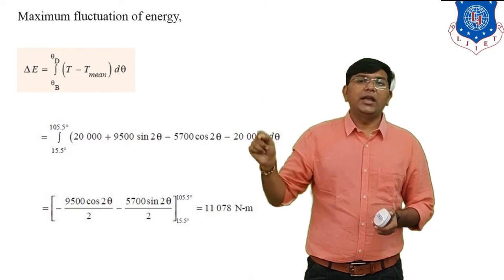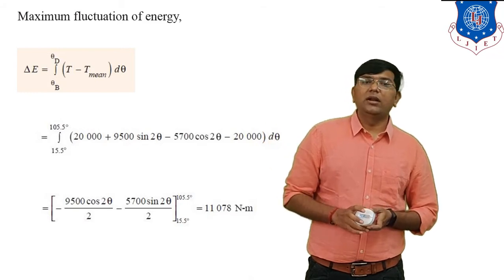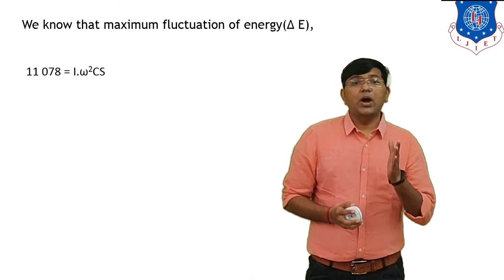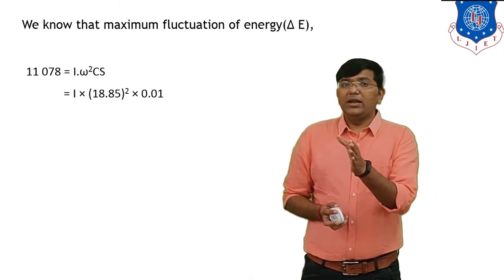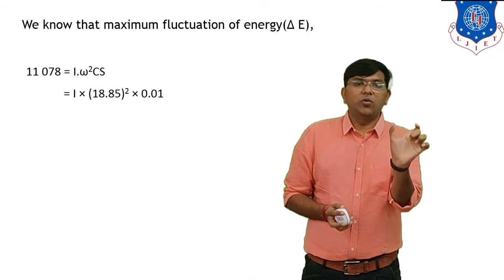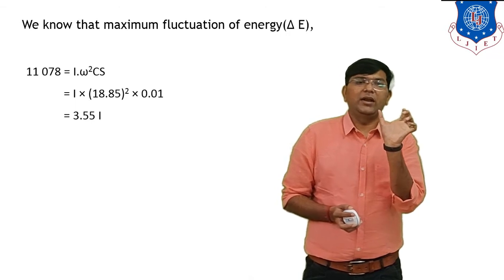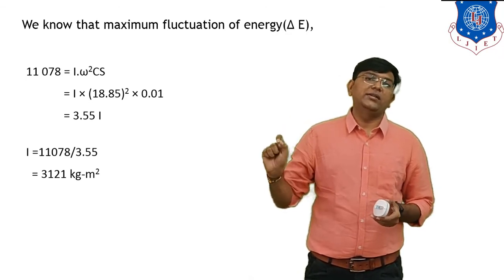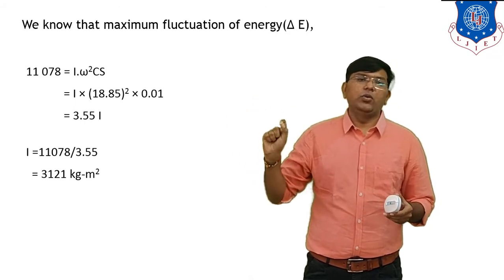So the value of delta E is 11,078 N·m. Now we can calculate capital I. We know delta E equals I·omega²·Cs. Substituting omega equals 18.85 and Cs equals 0.01, with delta E equals 11,078, the only unknown is I. Solving, I equals 3,121 kg·m². This is the moment of inertia of the flywheel, where I equals m·k².